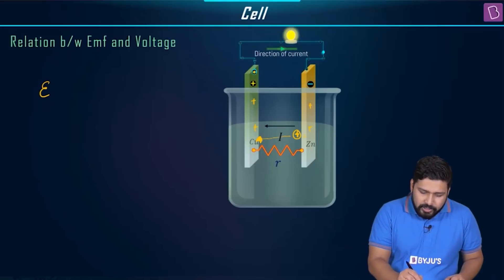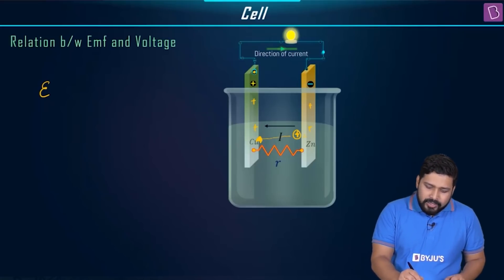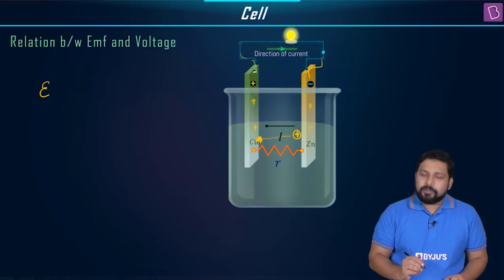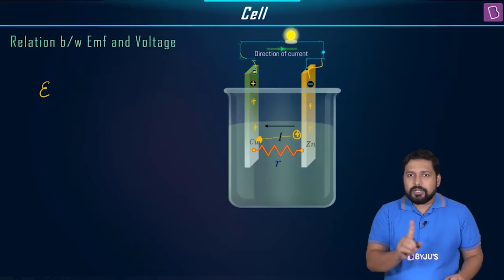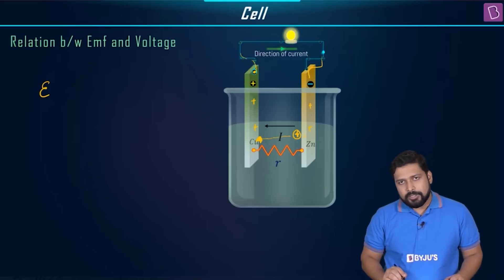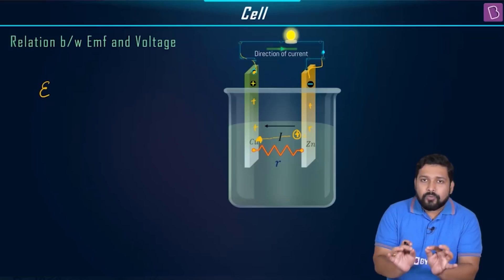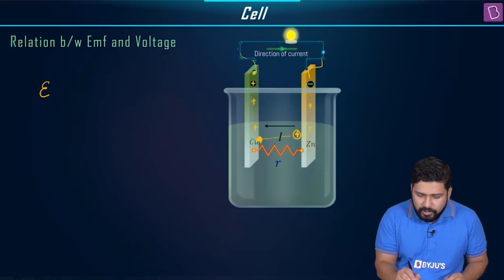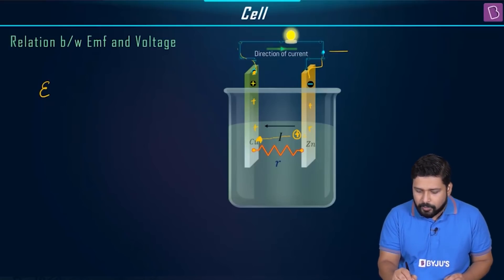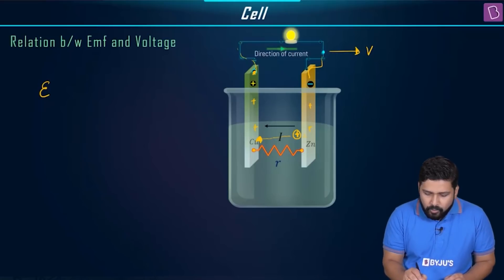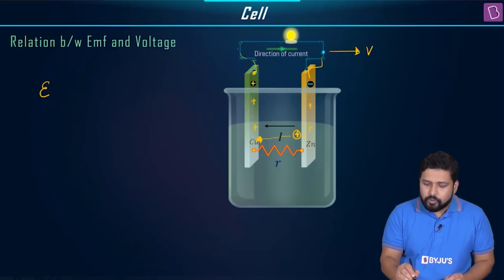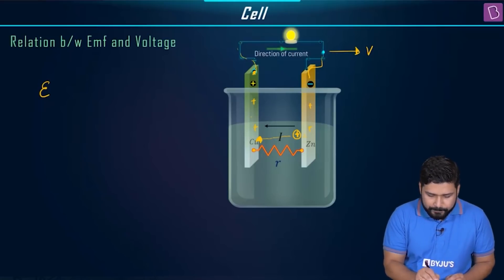The terminal potential is the amount of work done in going from one terminal to another terminal. So the amount of work done in going from one terminal to another terminal is equal to V.